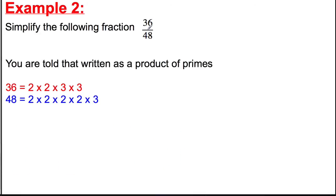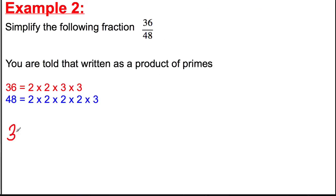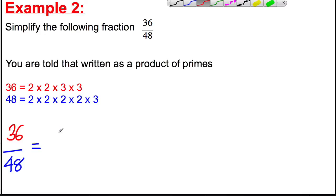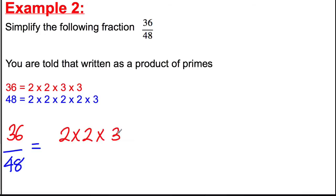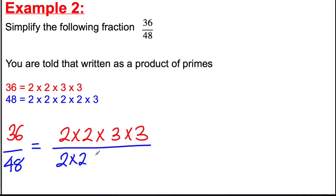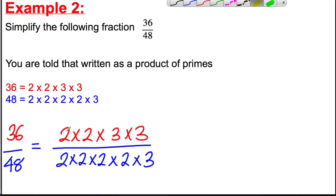Example 2: 36 over 48. We're given that 36 is 2 times 2 times 3 times 3, and 48 is 2 times 2 times 2 times 2 times 3. We write each number as its prime factors multiplied together: 36 is 2 times 2 times 3 times 3, and 48 is 2 times 2 times 2 times 2 times 3. There's a factor of 2 on the top and bottom, so we divide by 2 and get 1s in its place.